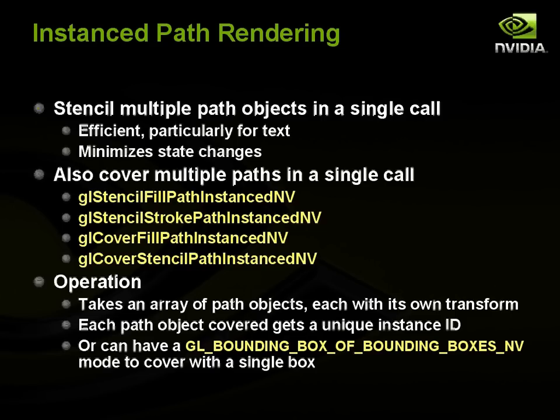It's often very common to want to stencil multiple path objects in a single call, and this needs to be efficient, particularly for the case of text. We might have a line of text characters that we want to render in a single call, and then we're going to cover the union of all those characters. One of the reasons we want to do it this way is to minimize state changes and overall CPU overhead. There are a couple different calls to do this — instanced versions of each of the four stencil and cover calls for fill and stroking.